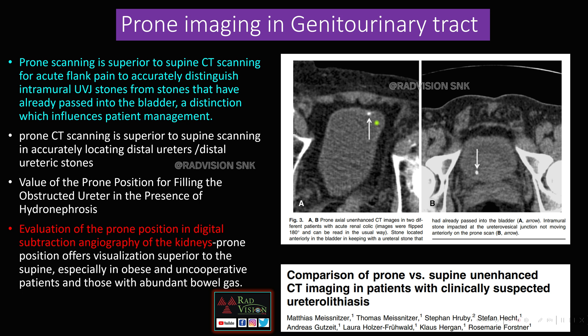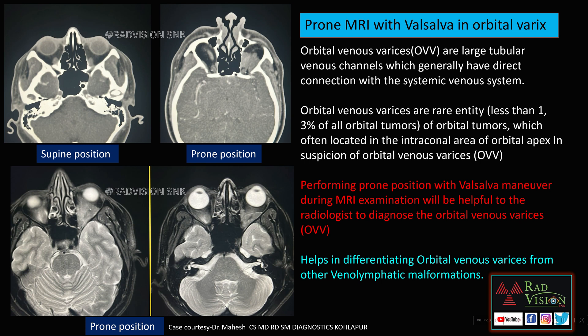Prone position in MRI is also useful in diagnosing orbital varices. In supine position the mass is not visible, but in prone position with Valsalva maneuver a mass is clearly seen in the orbital apex in the intraconal compartment — consistent with orbital venous varices. Prone position with Valsalva maneuver during MRI helps diagnose orbital venous varices and differentiates them from other venolymphatic malformations. Thanks to Dr. Mahe sir for contributing this case.